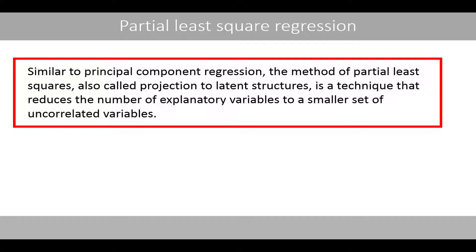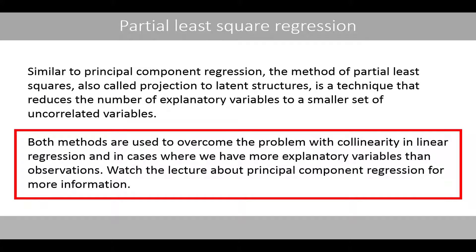Similar to principal component regression, the method of partial least-squares, also called projection to latent structures, is a technique that reduces the number of explanatory variables to a smaller set of uncorrelated variables. Both methods are used to overcome the problem with collinearity in linear regression, and in cases where we have more explanatory variables than observations. Watch the lecture about principal component regression for more information.